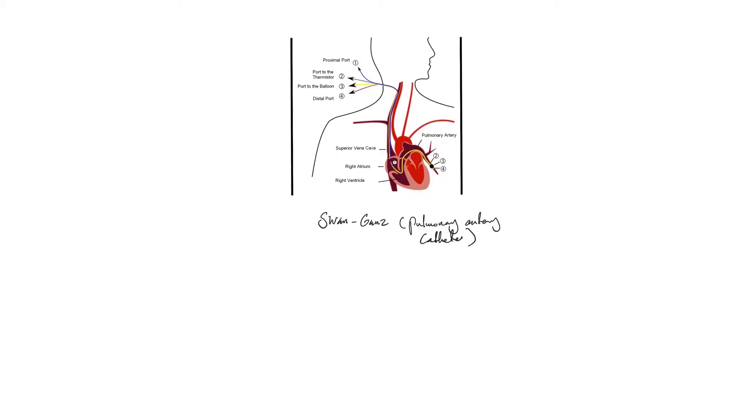Swan-Ganz and pulmonary artery catheters are the same. Swan and Ganz are the names of the physicians who first placed this catheter. From its name, it's a catheter whose distal end sits in one of the branches of the pulmonary artery.